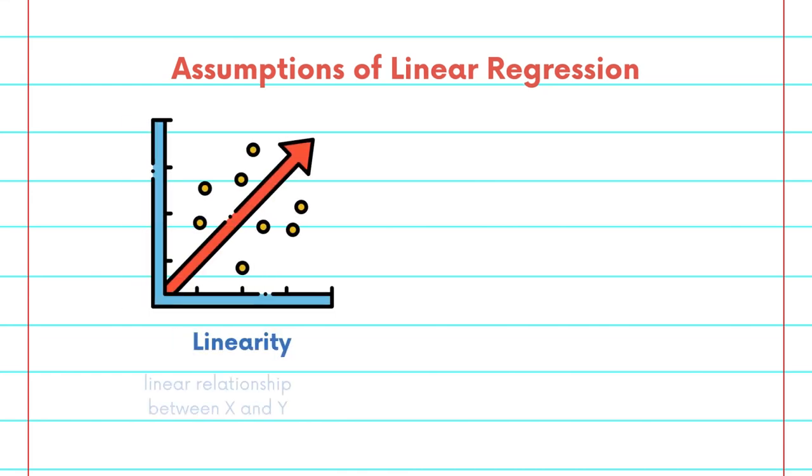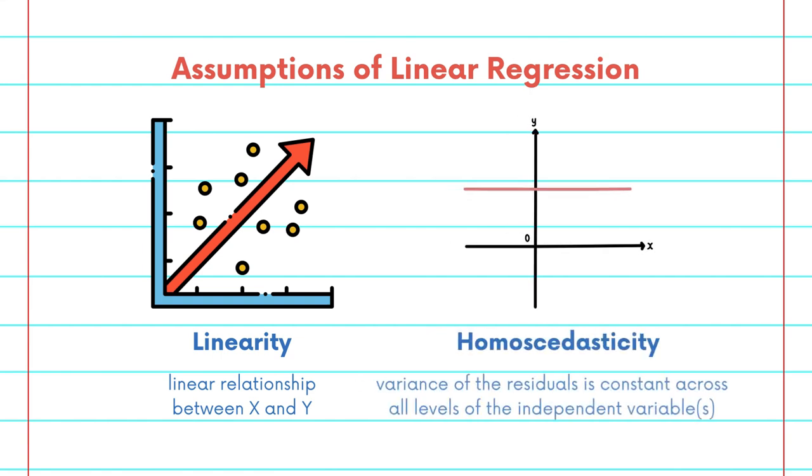First, linearity. It assumes there is a linear relationship between x and y. Secondly, homoskedasticity. It assumes the variance of residuals is constant across all levels of independent variables.